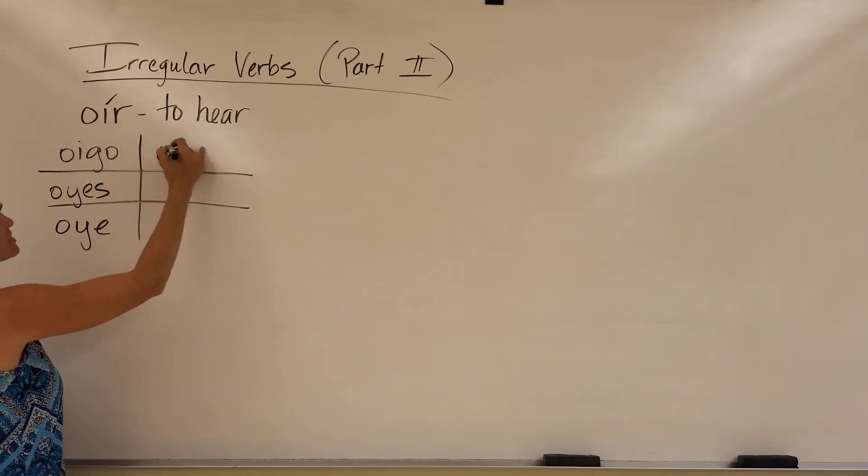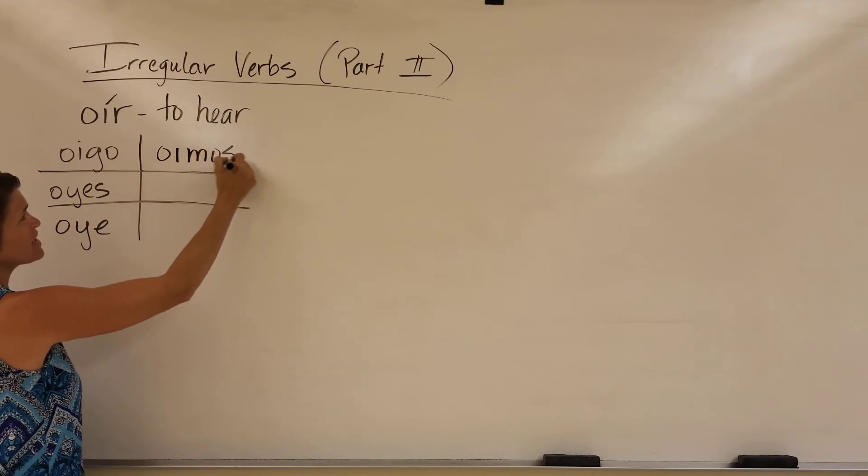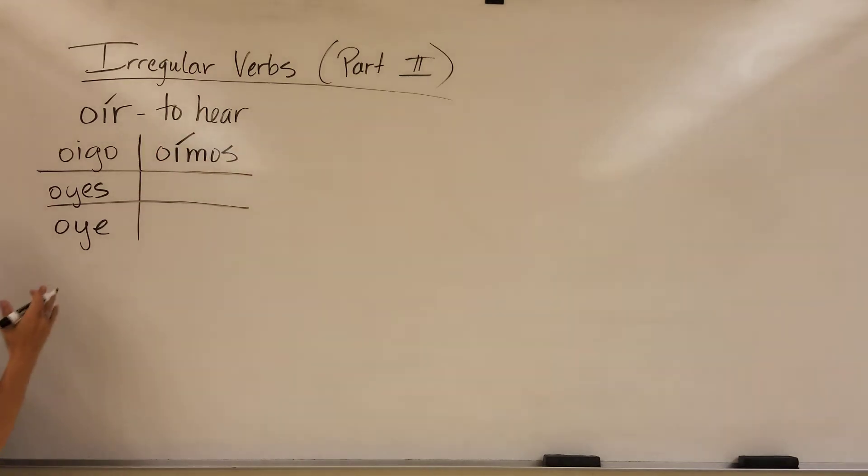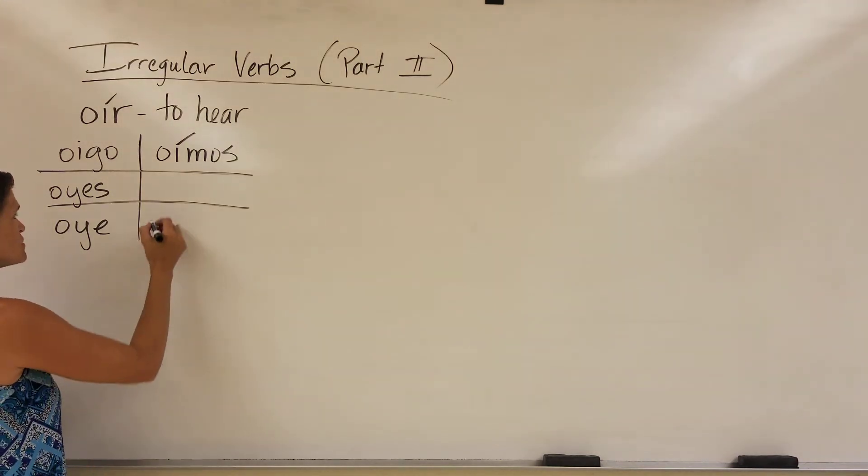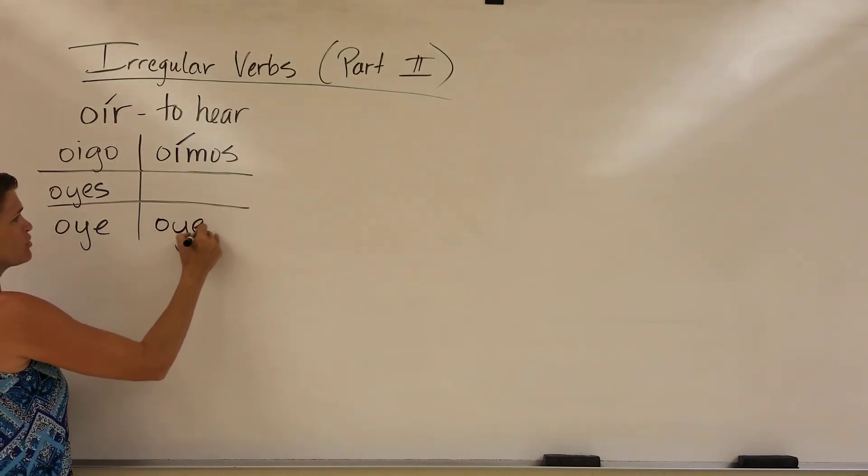It is an ir verb, so this is going to have the ir ending. Then we're going to use that accent to separate the sounds of the o and the i, so it doesn't say oimos, so it says oímos, and then oyeron.